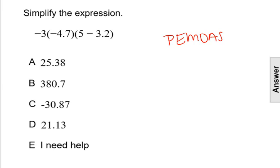The P in PEMDAS stands for parentheses, so we're going to do that operation inside the parentheses first. We have 5 minus 3.2, so that's going to change to 1.8. So I'm going to rewrite this as negative 3 times negative 4.7 times, and I'm going to put that difference in parentheses of 1.8.